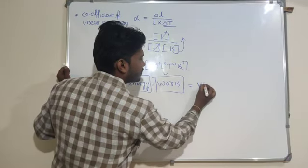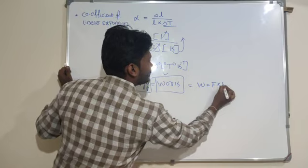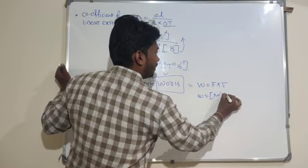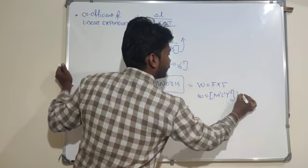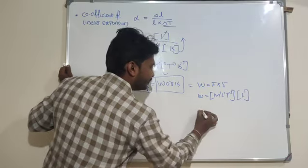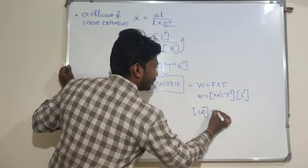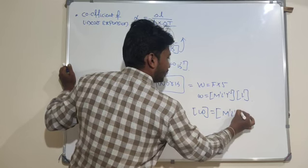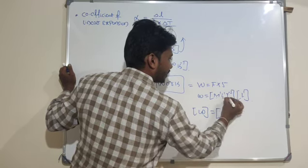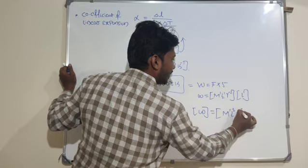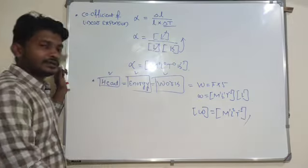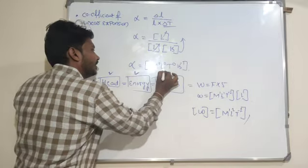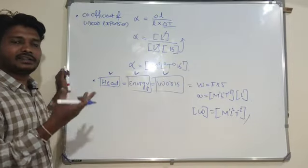Work is equal to force into displacement. Force is M1 L1 T to the power of minus 2, and displacement means L to the power of 1. So the dimensional formula for work done is M1 L2 T to the power of minus 2. This is the dimensional formula for heat, energy, or work — these physical quantities carry the same dimensional formula.